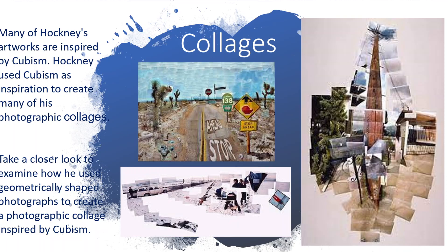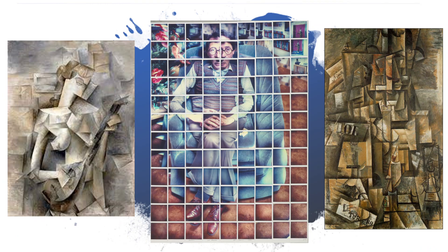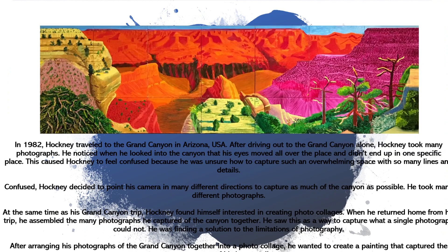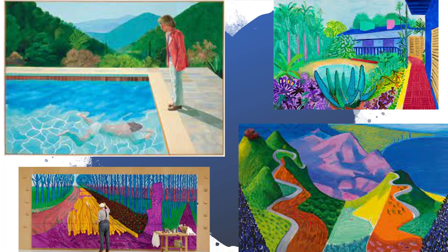Hockney was inspired by the Cubists. He made really cool Cubist-inspired photo collages where he would take lots of different pictures and use geometric shapes to assemble and piece together one image. We looked at how Hockney's work compared to the Cubists — here he's breaking those spaces down into cubes and fragmented parts. This is that painting of the Grand Canyon, where he goes into color and creates those abstract, bright colorful paintings.